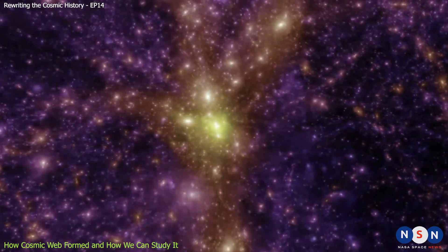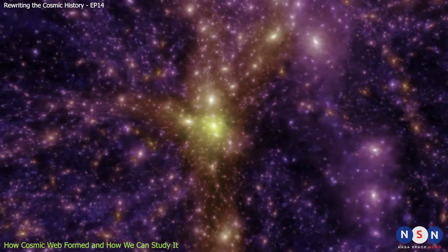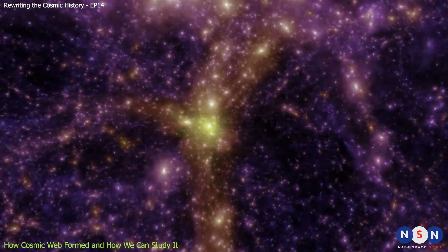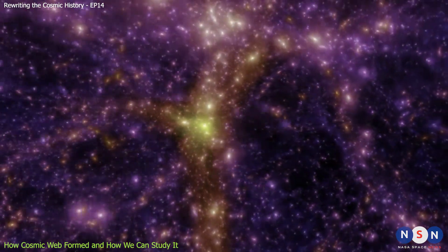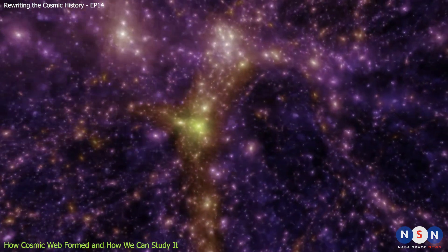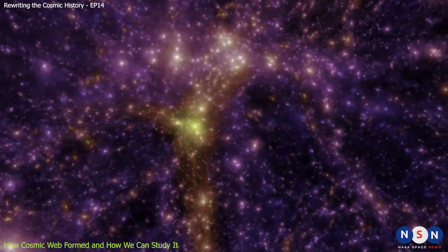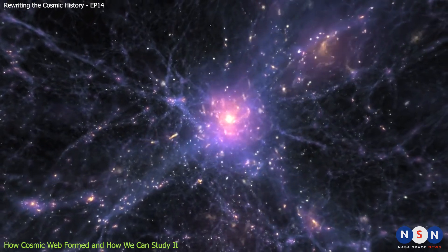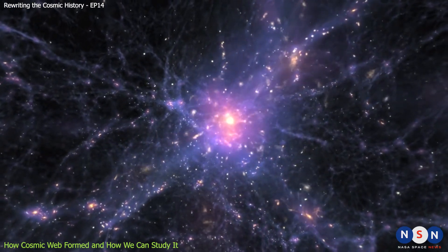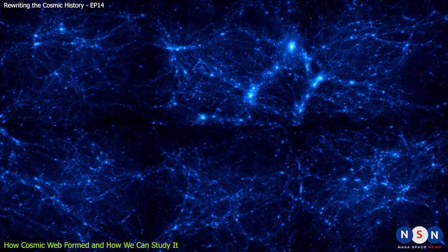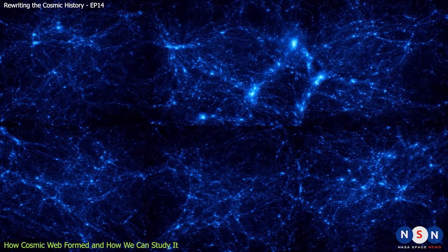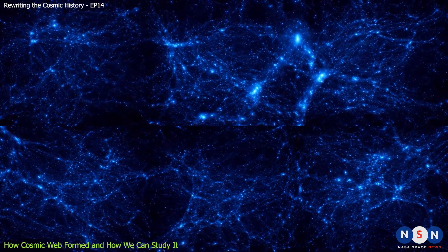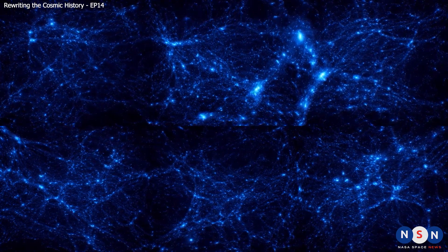Furthermore, the cosmic web is not static, but dynamic and evolving. Matter is constantly flowing from the voids into the filaments, and from the filaments into the clusters, where galaxies collide and merge. It also changes shape as the universe expands, stretching and distorting its threads. We study the cosmic web to better understand how galaxies form and evolve over time, and how they are influenced by their environment.